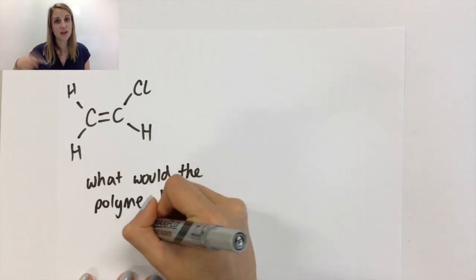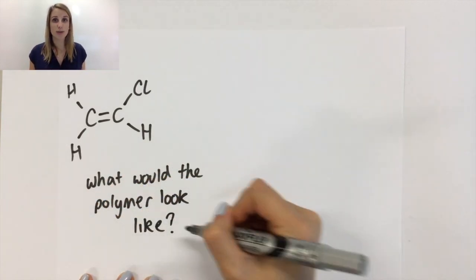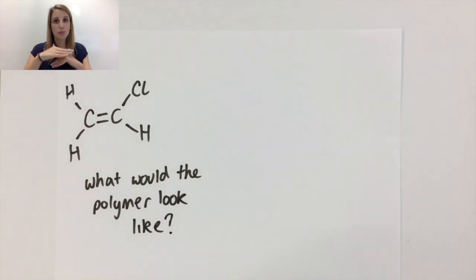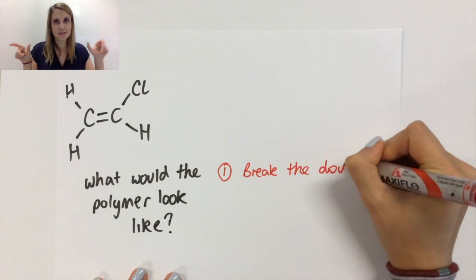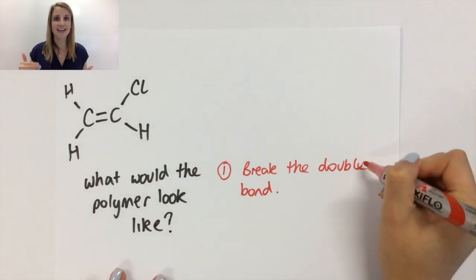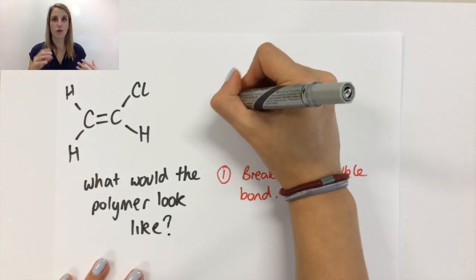So the first thing that we do in changing this into its polymer structure is we break open that double bond to leave the half bonds on either side ready to link up to other chloroethenes.